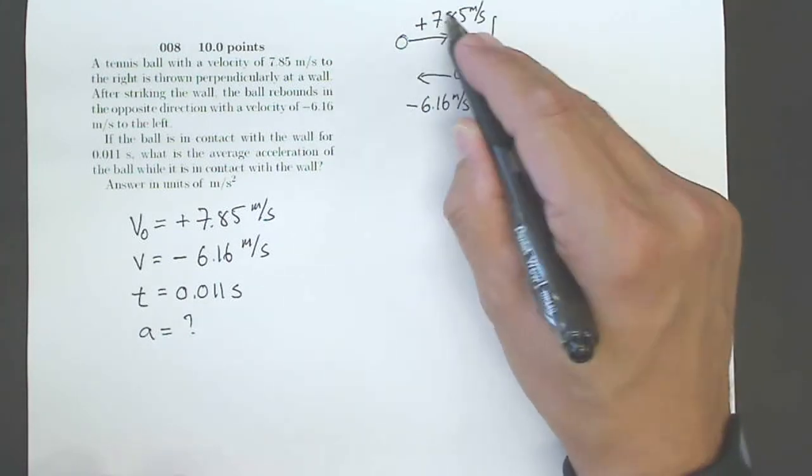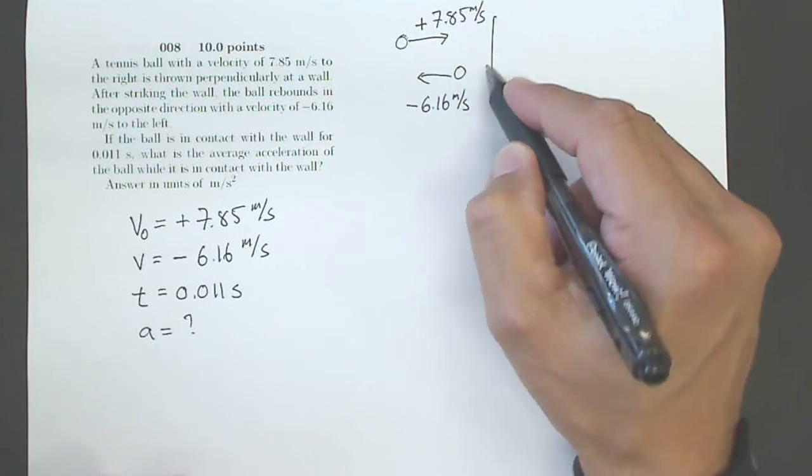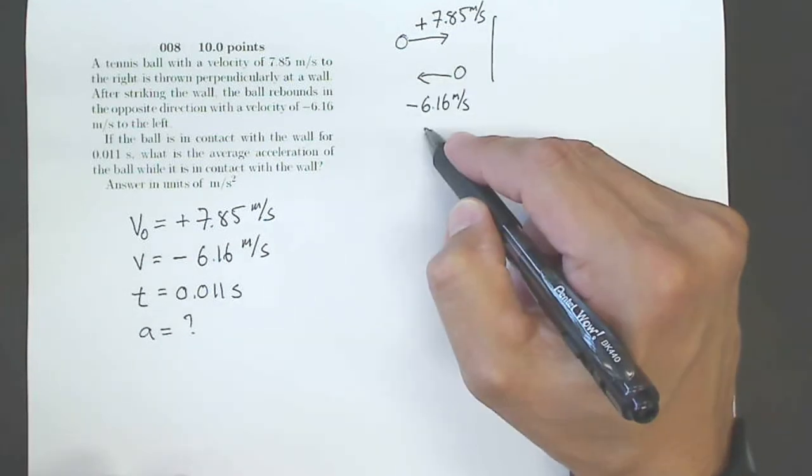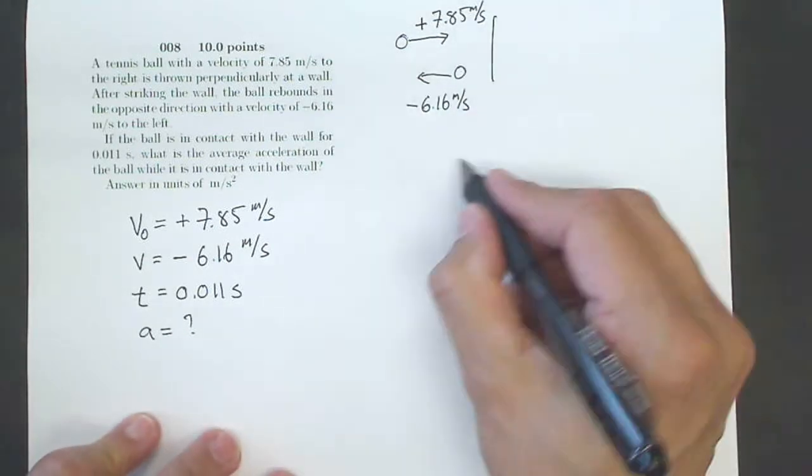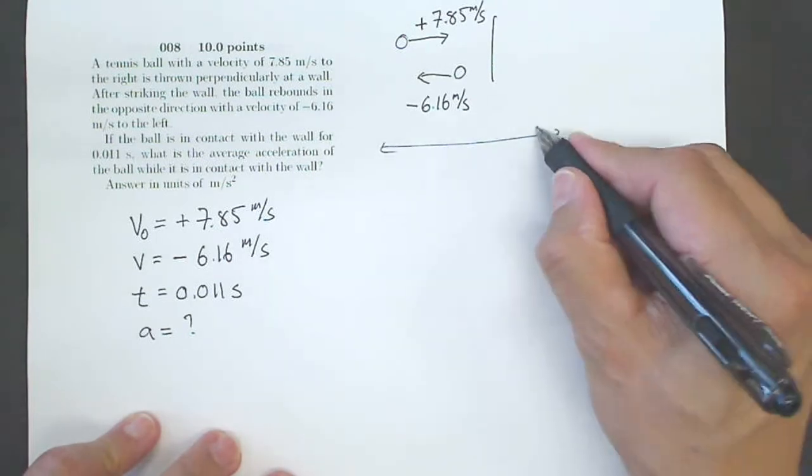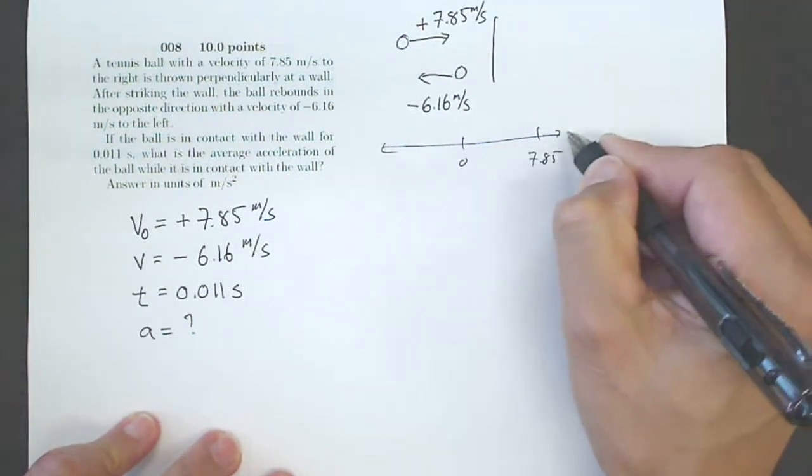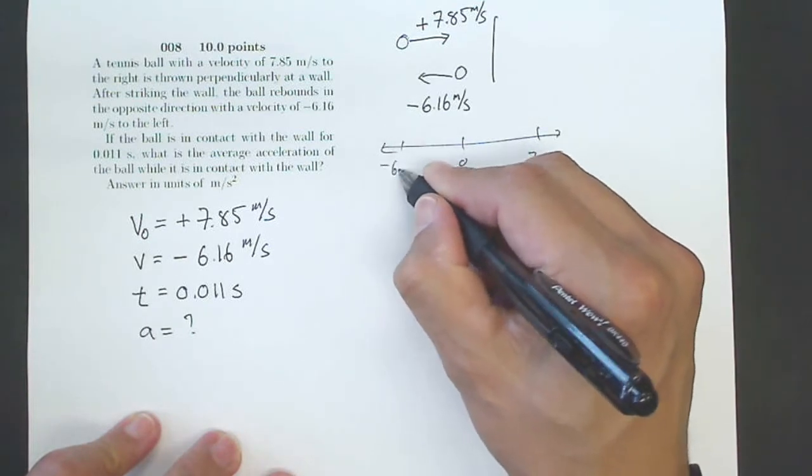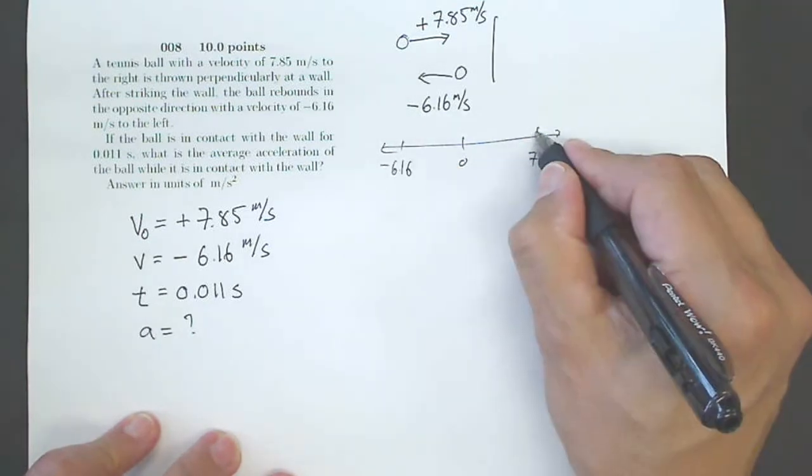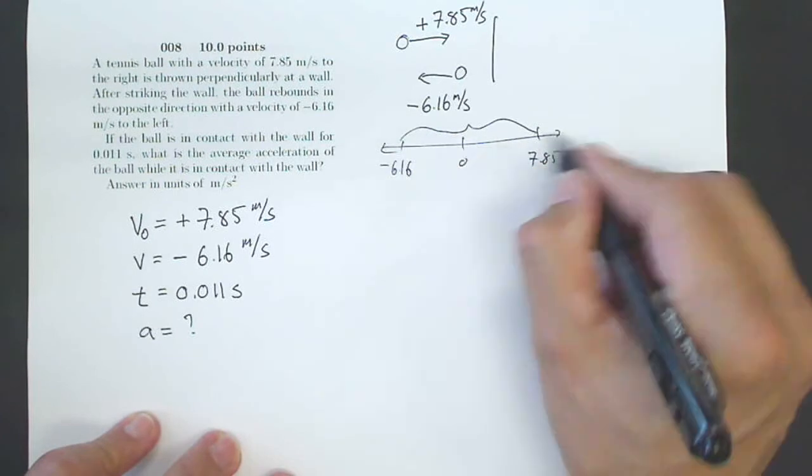It's actually come all the way to a stop getting rid of all of that speed, and then turned around and started going the other direction. If you plotted these on a number line, you would see that 7.85 is going to be over here somewhere, 0 is going to be somewhere over here, and negative 6.16 is going to be over here. So what is this distance? What is that amount?